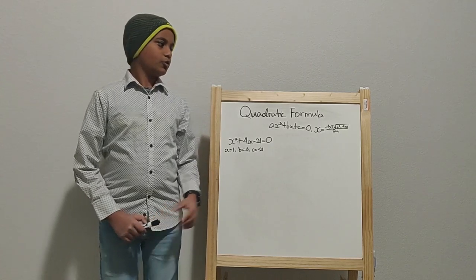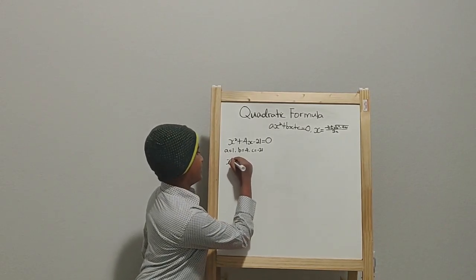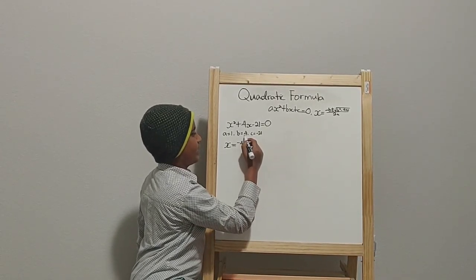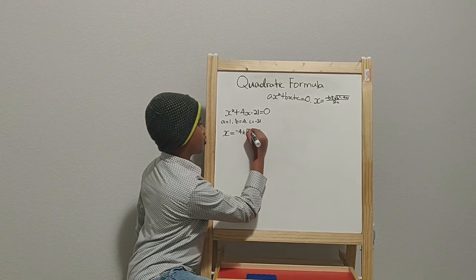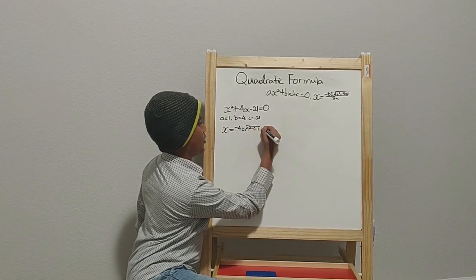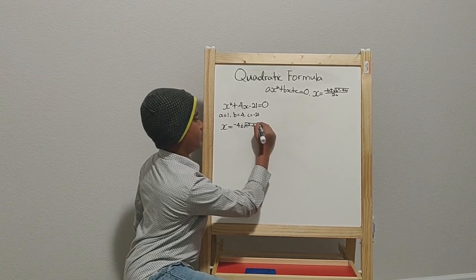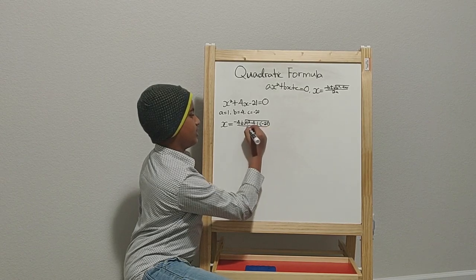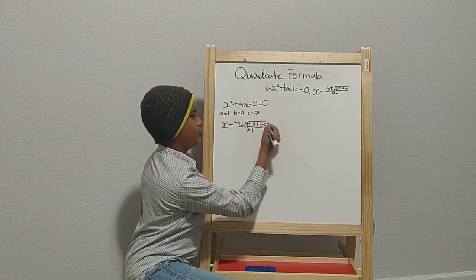So how do we do it? We use the formula. So what we're going to do is x equals negative 4, because b is 4, plus or minus square root of 4 squared minus 4 times 1, as a is 1, times negative 21, as c is negative 21. All of that is all over 2 times 1, as you know a is 1.